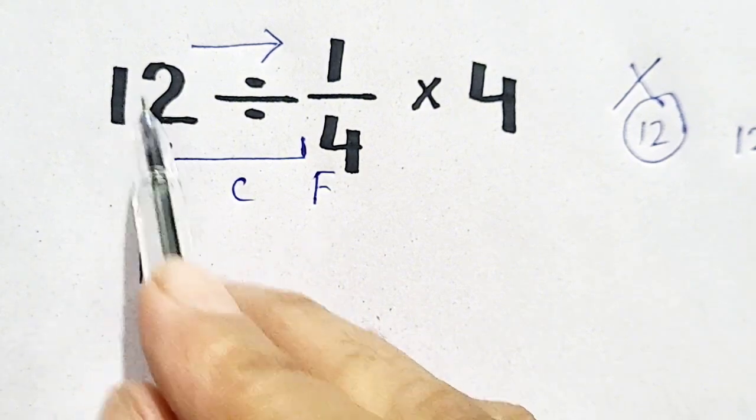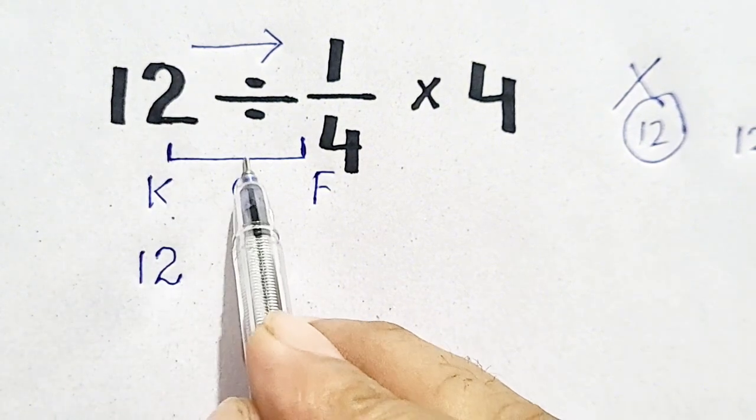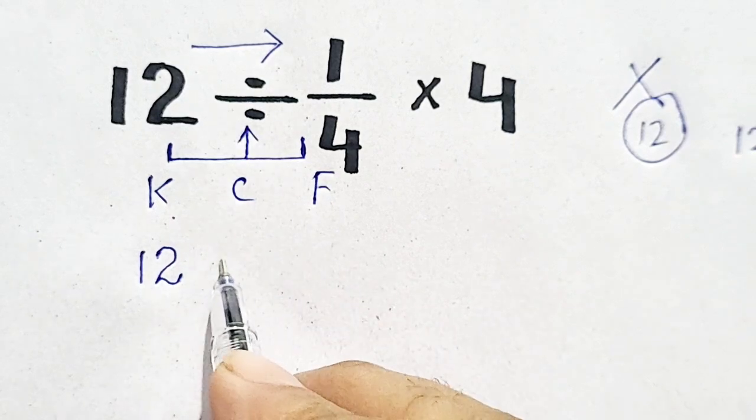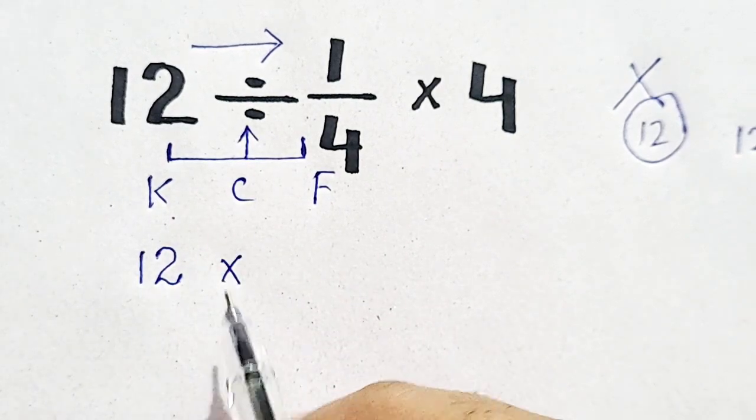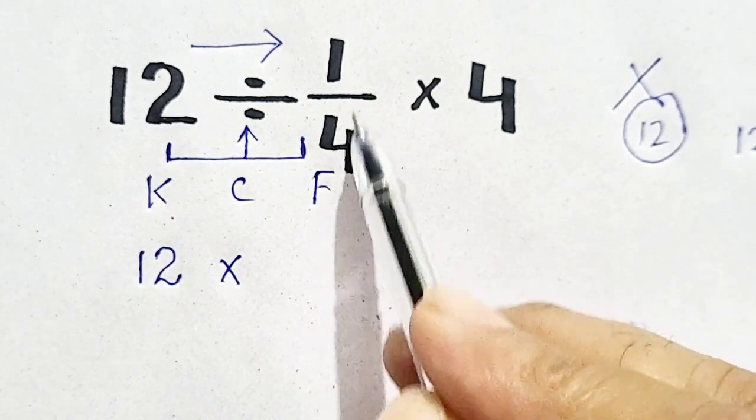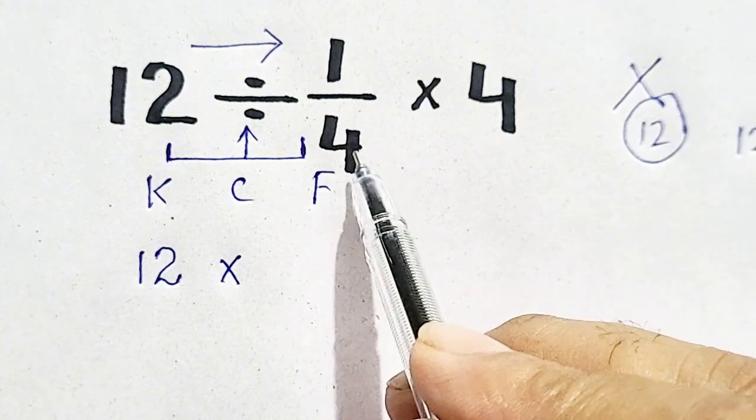We will keep 12 as it is. C means change. Divide is changed into multiplication. And F stands for flip. 1 over 4 is flipped.